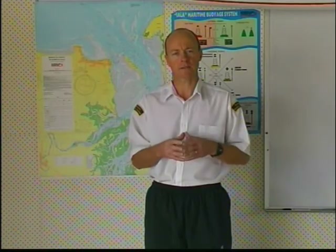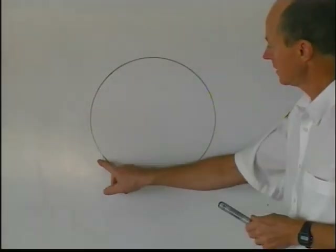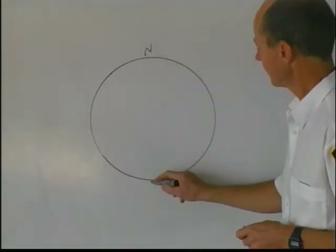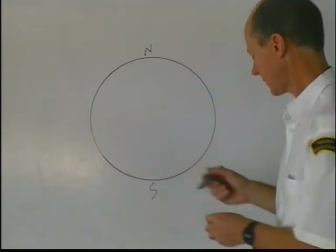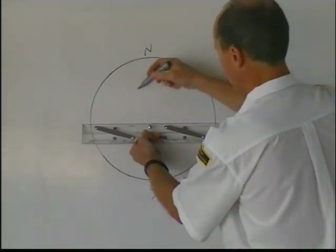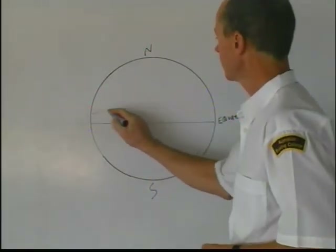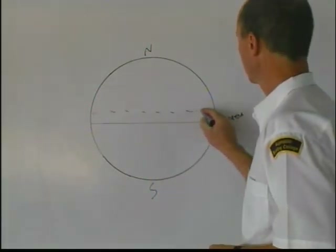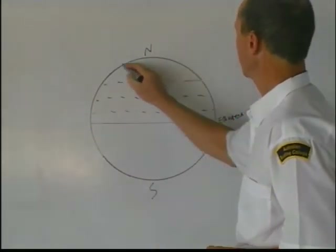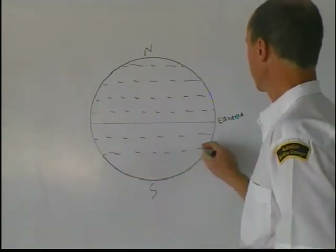Imagine this is the world here. There's our North Pole, there's our South Pole, and cutting across the very middle is the equator. Latitudes run parallel to the equator up into the northern hemisphere, and they also run parallel to the equator down into the southern hemisphere.